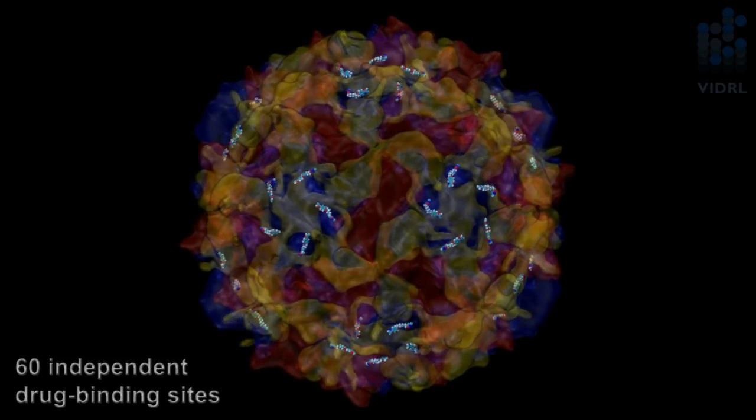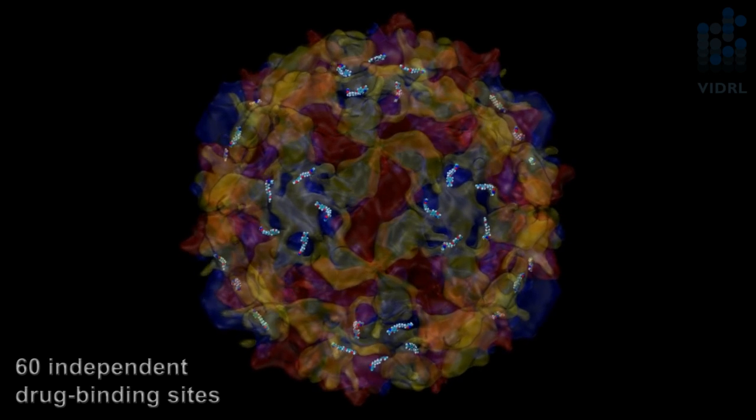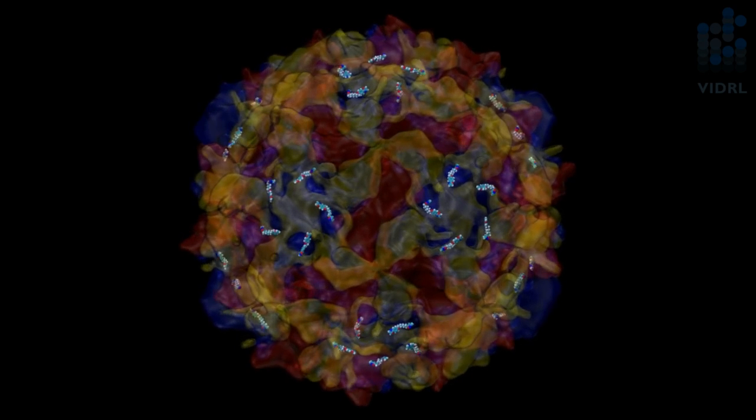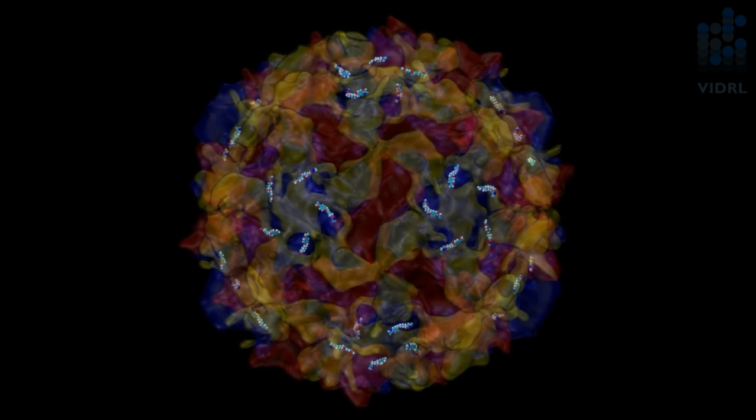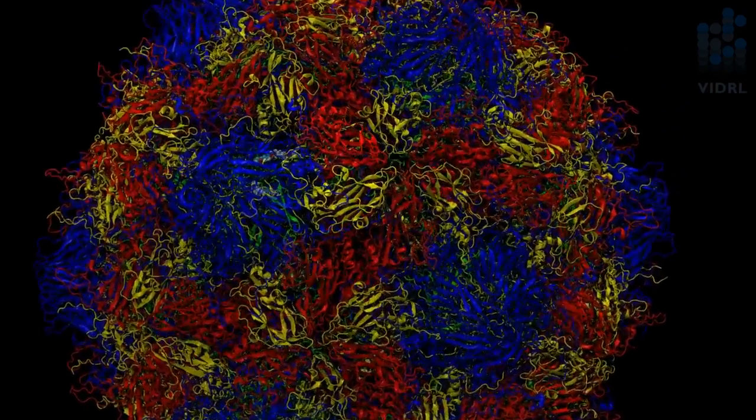The advantage of having 60 copies of this particular protomer creating the virus shell is that we don't just have one point with which to gather measurements, but we actually have 60 independent drug binding sites all behaving in a more biologically relevant and statistically relevant way.